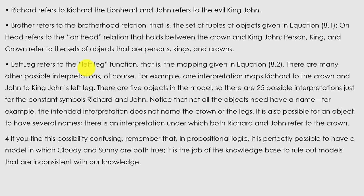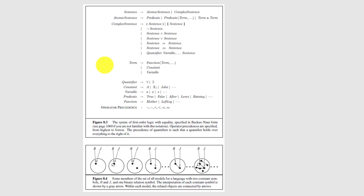If you find this confusing, remember that in propositional logic it is perfectly possible to have a model in which both 'cloudy' and 'sunny' are true. It is the job of the knowledge base to rule out models that are inconsistent with our knowledge. Sentences can be atomic or complex. An atomic sentence is a simple sentence that can be easily understood; a complex sentence has deeper meaning — it may carry two or three interpretations or consist of multiple atomic sentences.